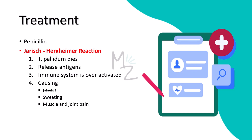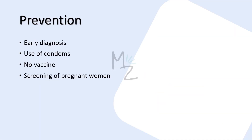Treatment involves penicillin. When giving penicillin, we should be cautious of the Jarisch-Herxheimer reaction, which occurs when T. pallidum dies and releases many antigens, causing the immune system to overreact with symptoms like fever, sweating, and muscle and joint pain, lasting hours to days. Prevention depends on early diagnosis and treatment, use of condoms, administration of antibiotics after suspected exposure, and serologic follow-up of infected individuals and their contacts. There is no vaccine against syphilis. To prevent congenital syphilis, all pregnant women should be screened using a treponemal test such as FTA-ABS.